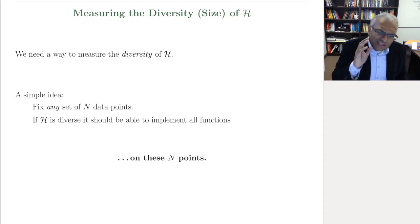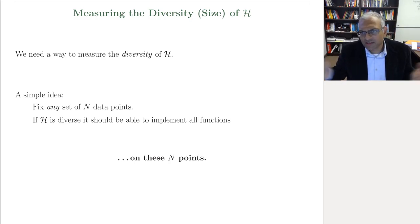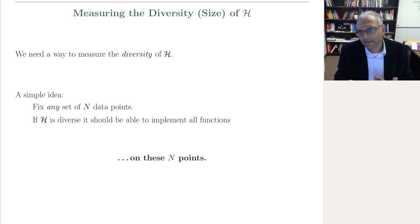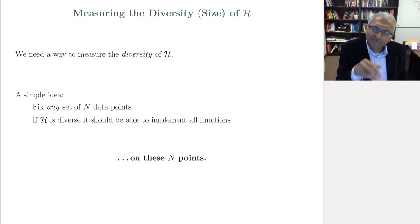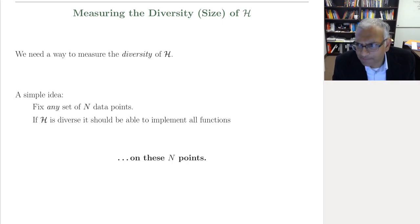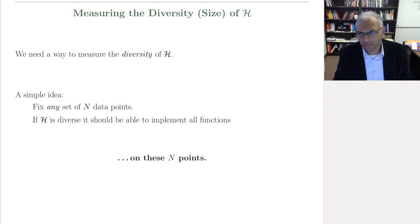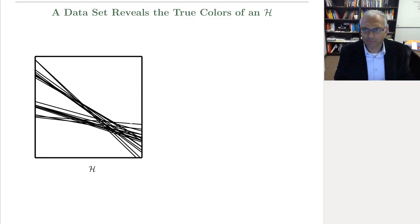The bottom line is that the size of the hypothesis set is a measure of its complexity, but it can be a gross overestimate when the hypotheses are very similar. We want a measure of the effective complexity that captures the similarity between hypotheses. If every hypothesis is basically the same, the effective size should be close to one, not close to infinity. We need a way to measure not just the size of the hypothesis set, but also its diversity. Let's play along with an experiment: fix any number of data points, say n.